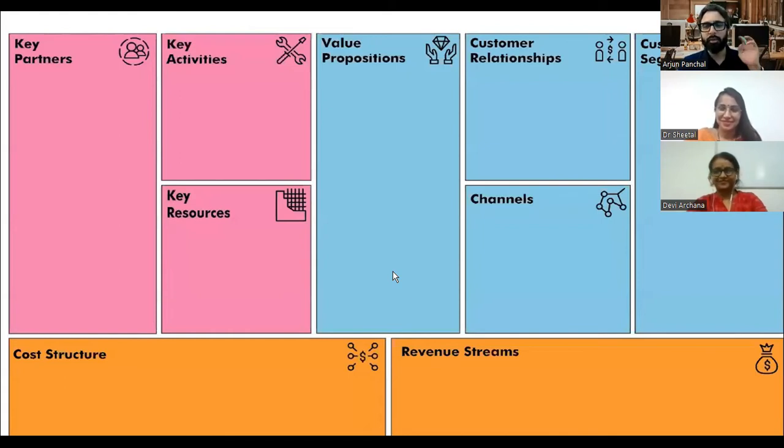What do you think? If you divide this BMC into half, on the right-hand side it's all about customers, on the left-hand side it's all about business. That's why you see different colors. You take revenue from customers at the bottom. On the left-hand side, that's why it's all cost incurred in the business. So what do you think? Key resources?